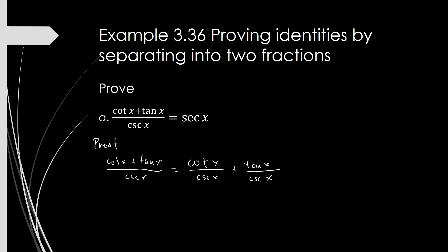From here, I will now apply our fundamental identities. Cotangent is cosine over sine, and cosecant is one over sine.